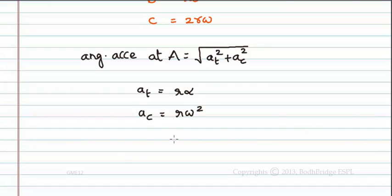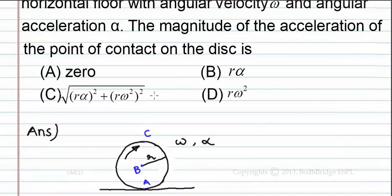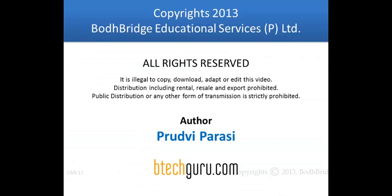So the resultant acceleration is equal to root of R alpha whole square plus R omega square whole square. So the correct answer is Option C: root of R alpha whole square plus R omega square whole square.